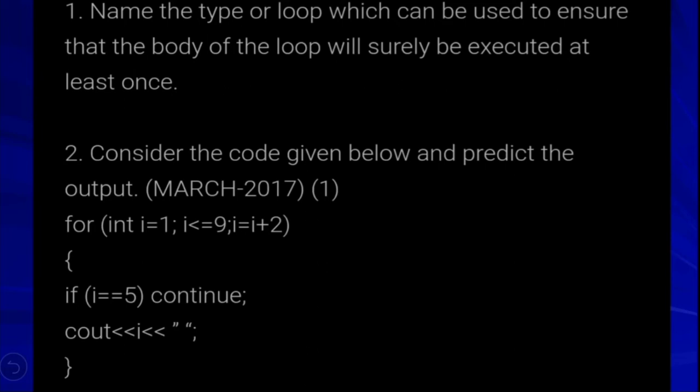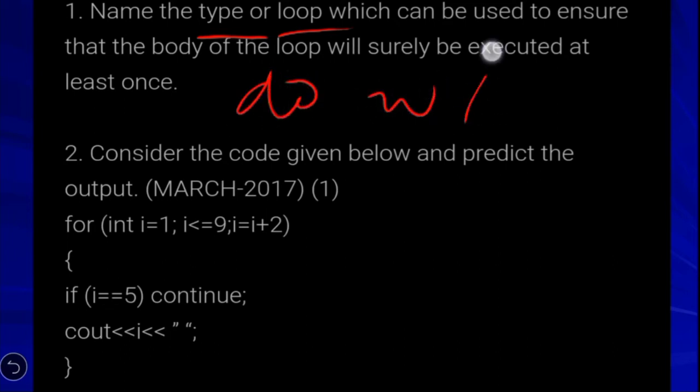Name the type of loop which can be used to ensure that the body of the loop will surely be executed at least once. The answer is the do-while loop, because its body executes before the condition is checked.